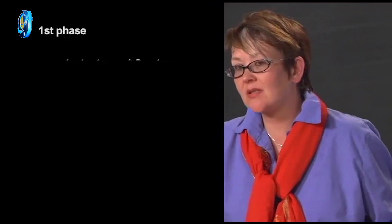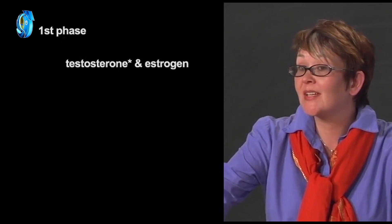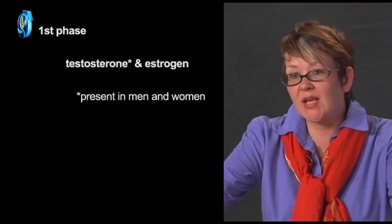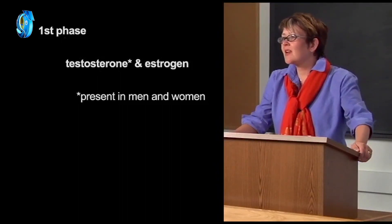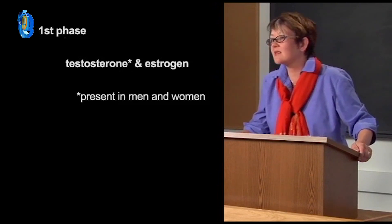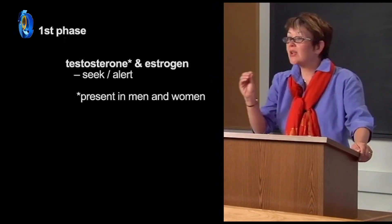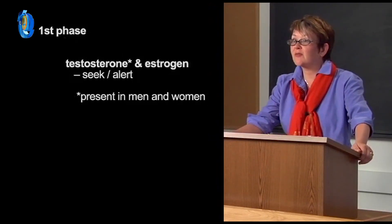In the first phase, the hormones testosterone and estrogen play important roles. Although testosterone has a reputation as a male hormone, it is also present in women. And it has many effects on the brain, one of which is to make us seek partners and to be alert to the presence of possible partners. So in essence, these hormones get us out looking for and then noticing prospective partners to fall in love with.